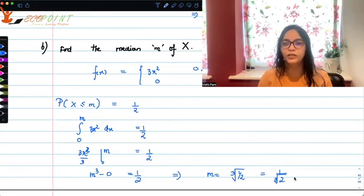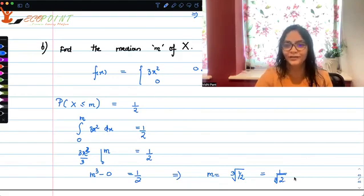So by now, I guess you should be comfortable with the concept of finding median of discrete random variable as well as continuous random variable. Thank you. Hope this helps.